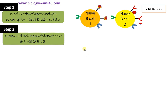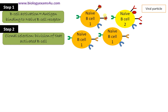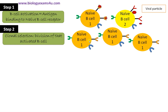Upon activation, the particular B cell with that specificity is selected to divide. Step two is called clonal selection — the division of the activated B cell. That particular clone of cells is selected to divide, which is why it is called clonal selection. Numerous B cells are produced inside the system.